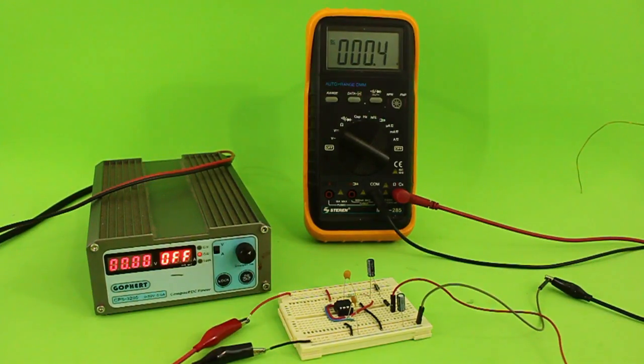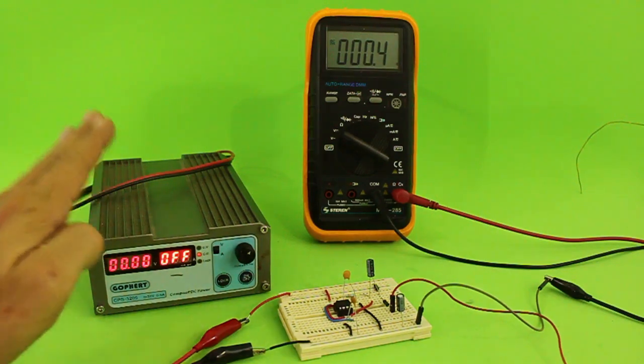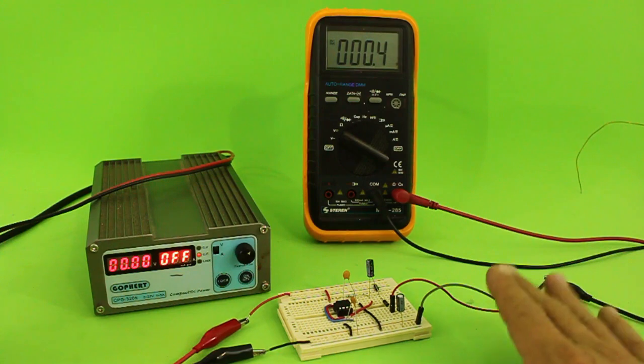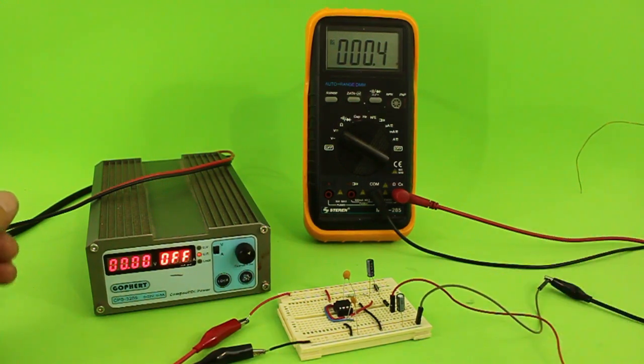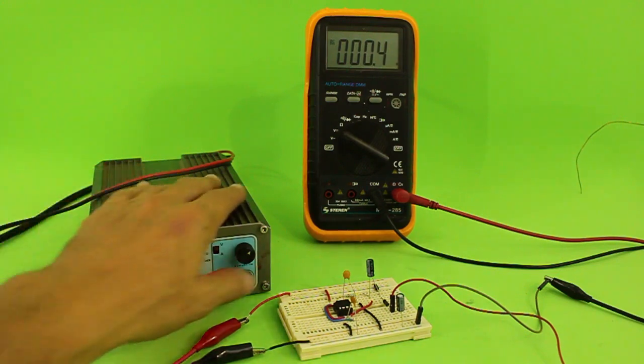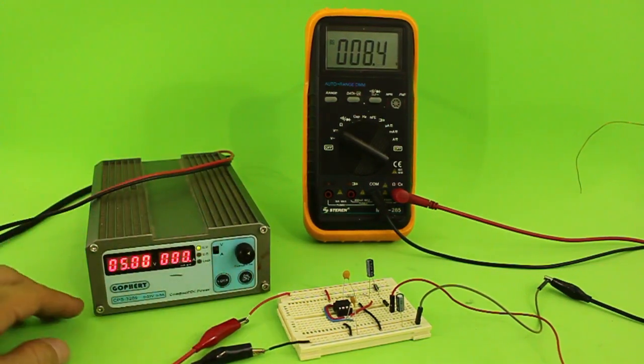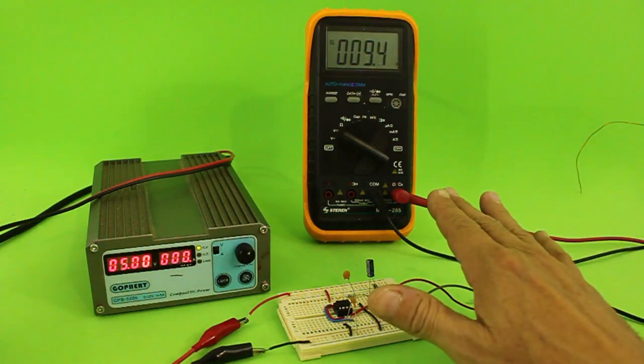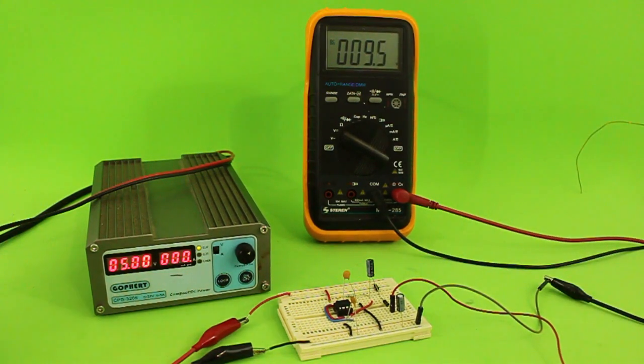Let's test our voltage doubler. I have my power supply connected to the circuit and the output connected to the multimeter to check the voltage at the output. So let me turn on the power supply at a value of 5 volts, and we can see that we have at the output a voltage of 9.6 volts, almost double the input voltage.